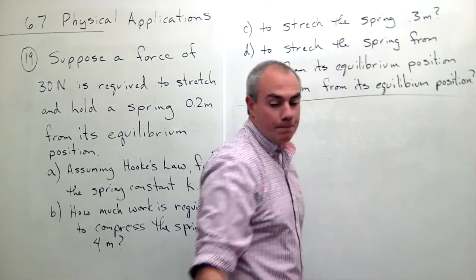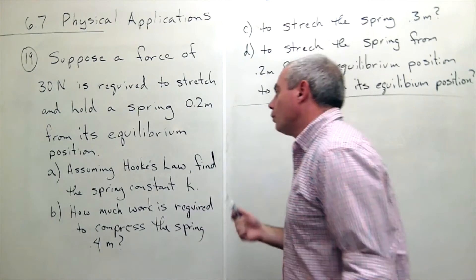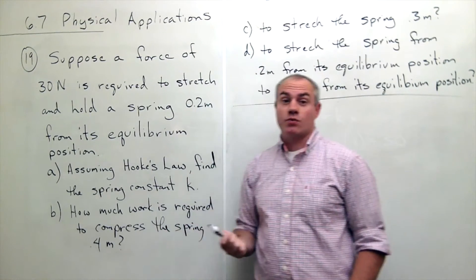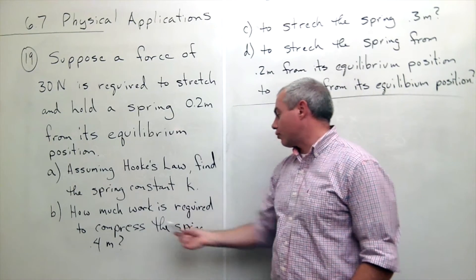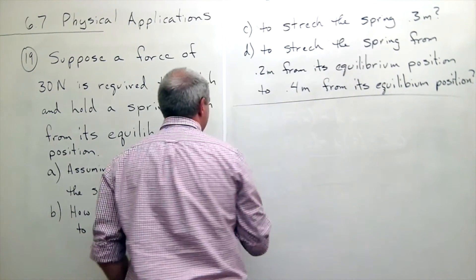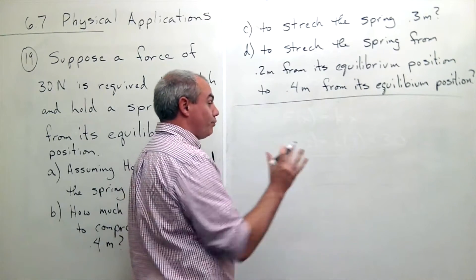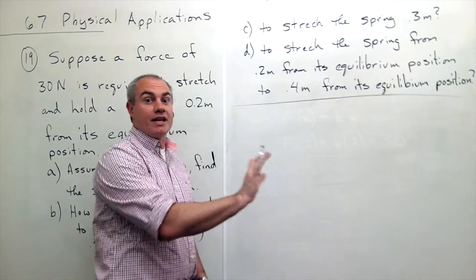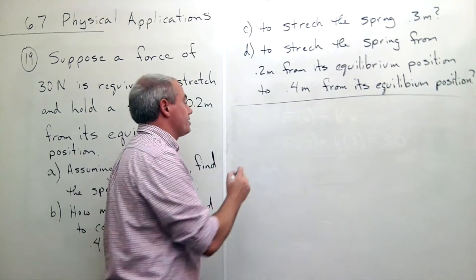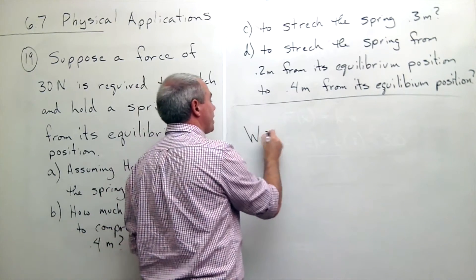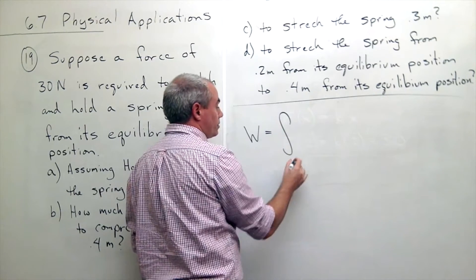So in part B we know now that the spring constant is 150. We want to know how much work is required to compress the spring 0.4 meters. Compress means push it back into negative territory, not pull it forward into positive.